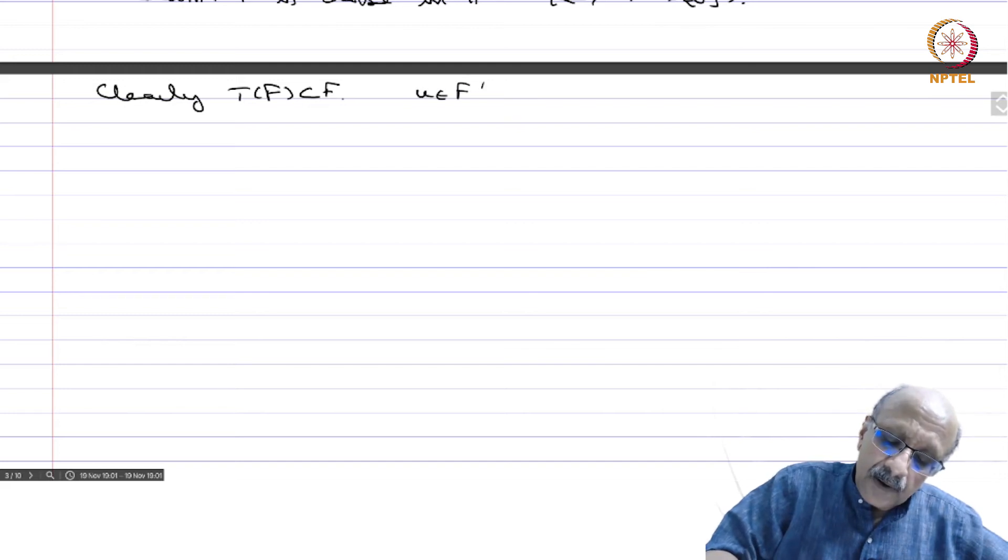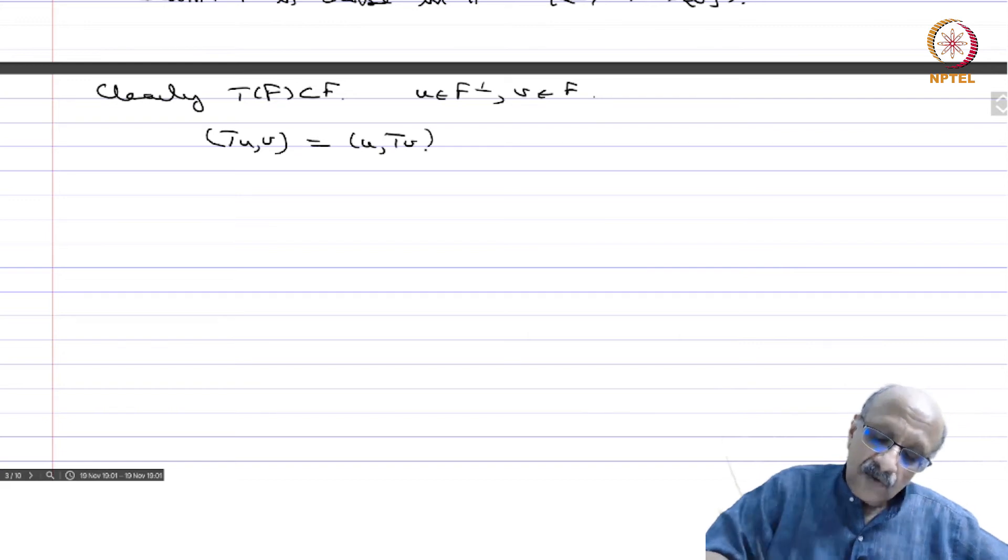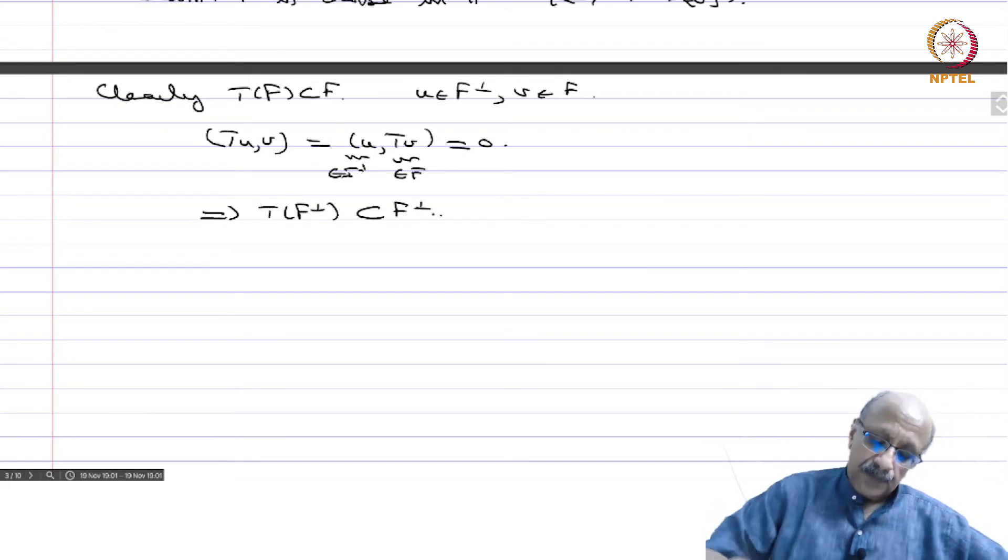Now, if u is in F perp and v is in F, then T(v) is also in F and this is in F perp and therefore this is equal to 0. This means T(F perp) is also contained in F perp.